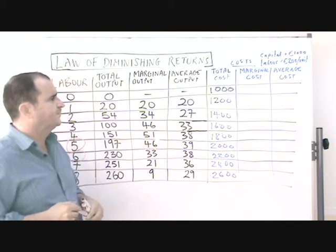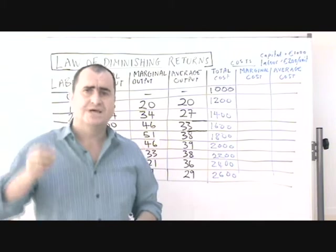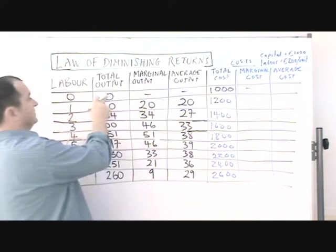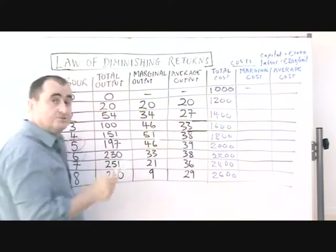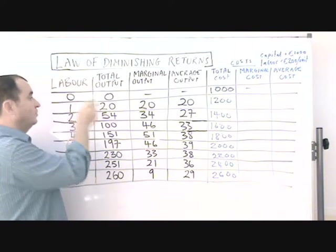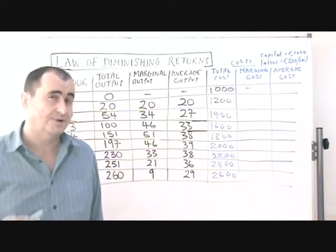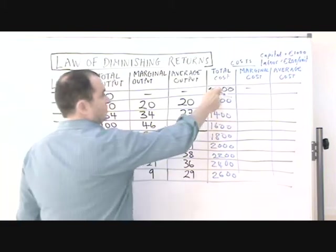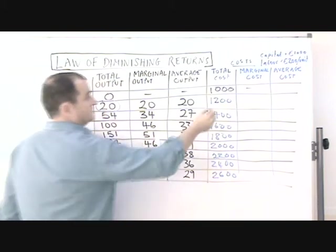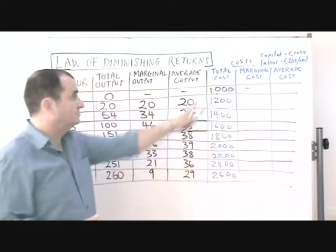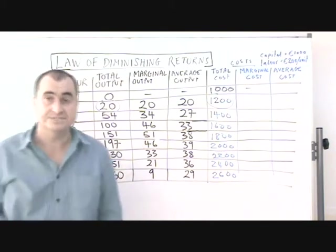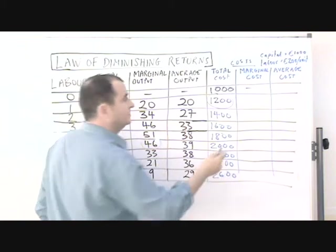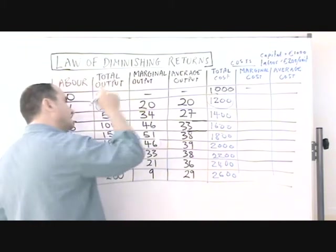Marginal costs. This is the marginal cost of making each extra unit of output. We can't calculate the marginal cost of no output, but we can calculate the marginal cost of each of these 20 units of output when one worker was added. Each of the 20 units — the change in total cost was 200. So to make these first 20 units, and it's only these first 20 units, there was a cost of 200. So the marginal cost per unit is the 200 of the extra costs divided by the 20 units.